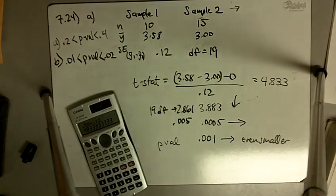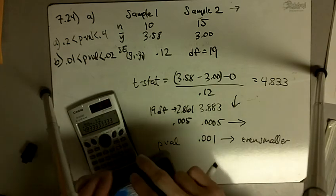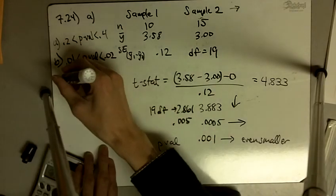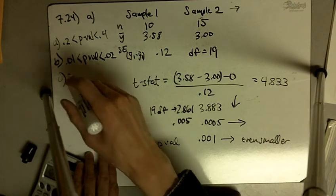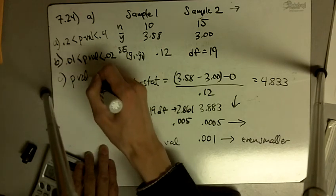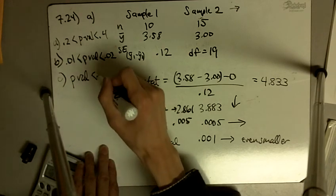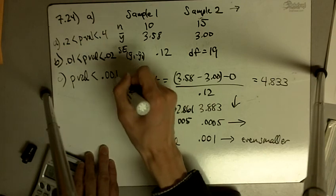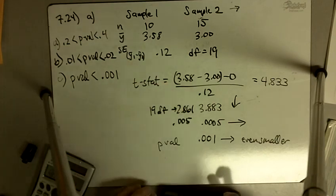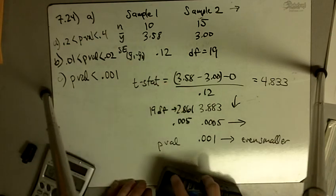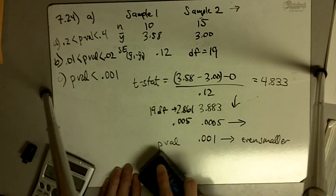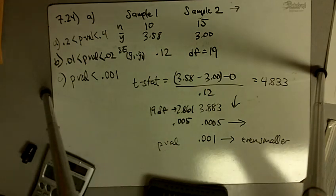The t-values get bigger as we get further away from the center. At 4.833, that's going to be even smaller. For part C, all we can conclude is the p-value is less than 0.001. We just don't have any more precision than that in our t-tables. That's problem 724.